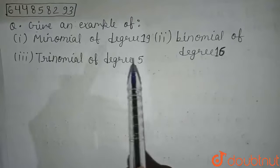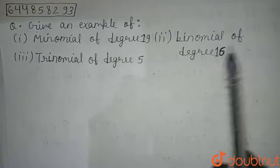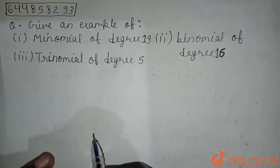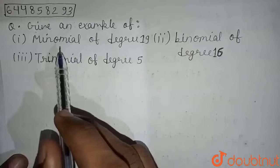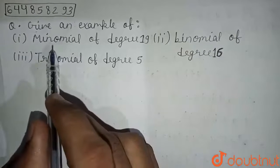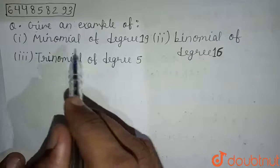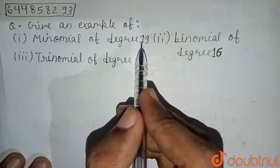Give an example of monomial of degree 19, binomial of degree 16, and trinomial of degree 5. What's the meaning of monomial? It means a variable having degree of 19.